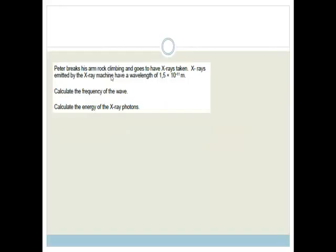So as Peter breaks his arm rock climbing, goes to have x-rays taken. X-rays emitted by the x-ray machine have a wavelength of 1.5 times 10 to the minus 11 meters.